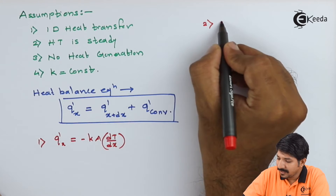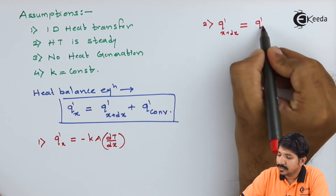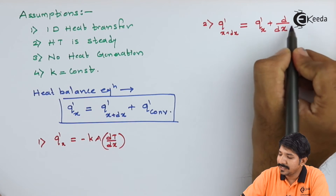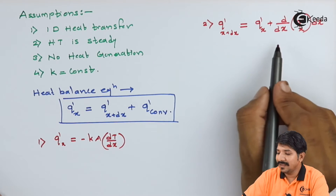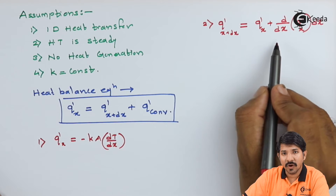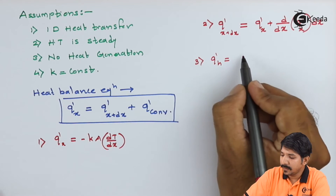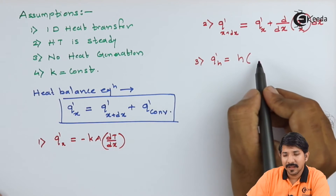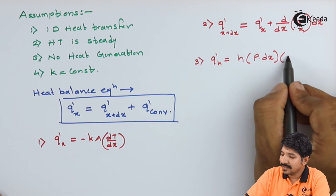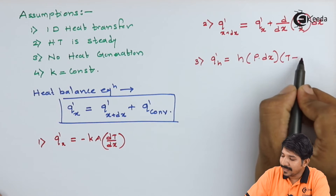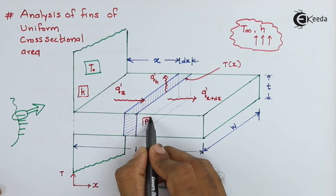Q of X can be written as minus K A dT/dx. Q of X+dx can be written using the Taylor series as Q of X plus d/dx of Q(X) times dx, eliminating higher order terms. Q of H equals H times the perimeter times dx times the temperature difference, that is T minus T infinity. Here the perimeter for a given small element is considered as twice the thickness plus width.